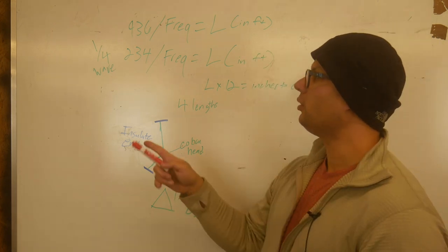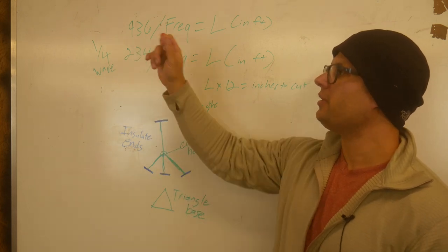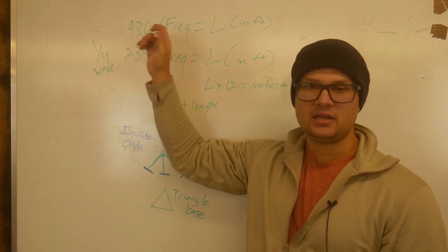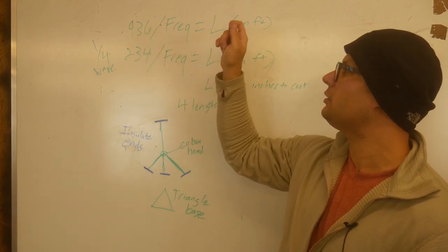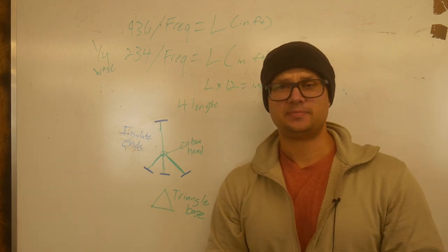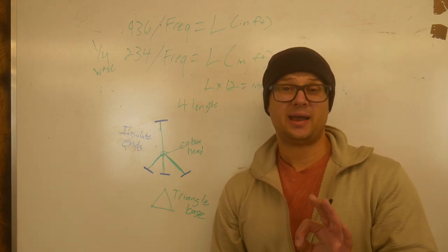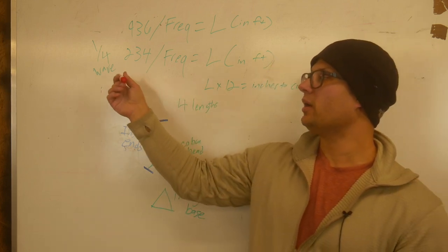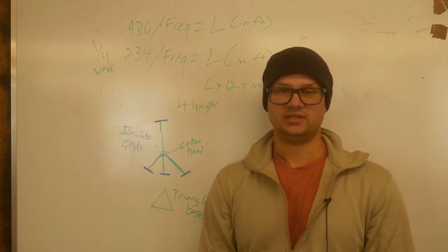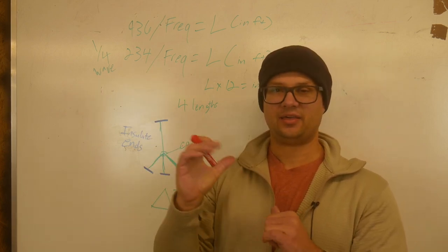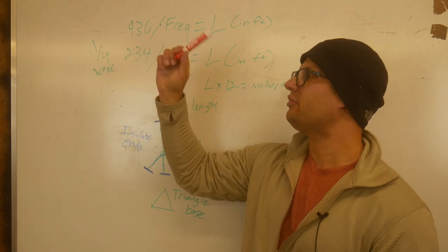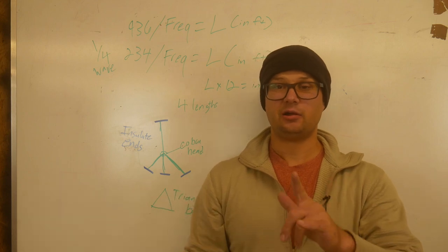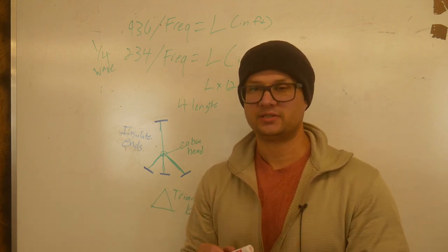The first thing you need to know is this formula up here. The formula is 936, that is the constant number. 936 divided by your frequency equals your length in feet. Now I don't understand all the science behind this part. Someone else probably does. To be honest, I don't really care. I just want what works. With a jungle antenna, you need to go in quarter wave frequencies. So you only need a quarter length of that 936. So 936 divided by four is 234.